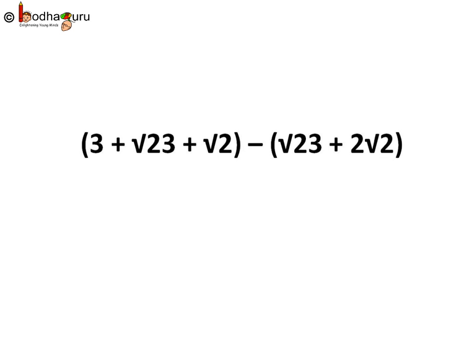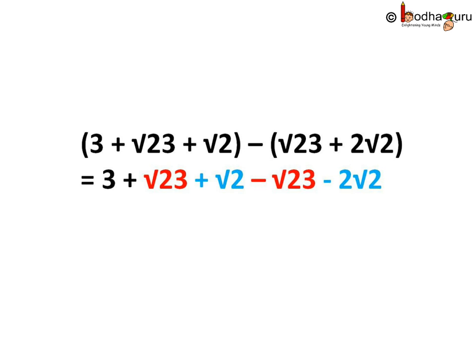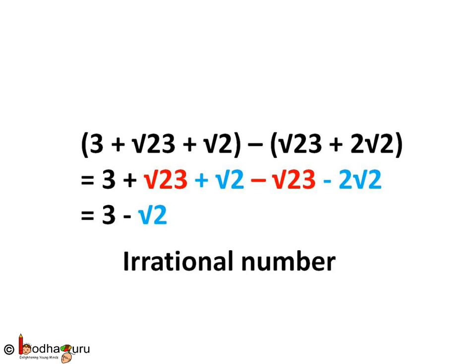Let us take another example: (3 + √23 + √2) minus (√23 + 2√2). Is it rational or irrational? Opening the bracket, we get 3 + √23 + √2 − √23 − 2√2. The minus sign before the bracket applies to both √23 and 2√2. Now √23 and −√23 cancel out. And √2 − 2√2 equals −√2, just like x − 2x equals −x. So the final answer is 3 − √2, which is an irrational number.